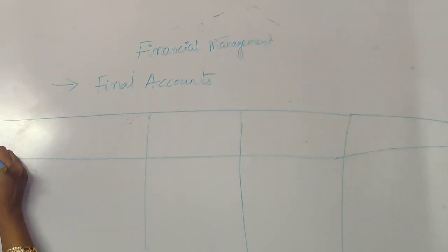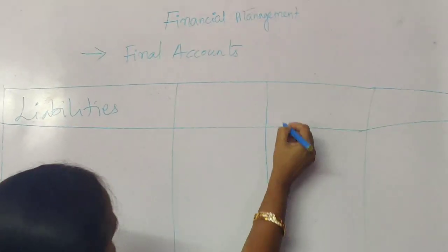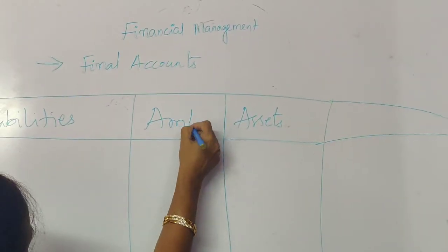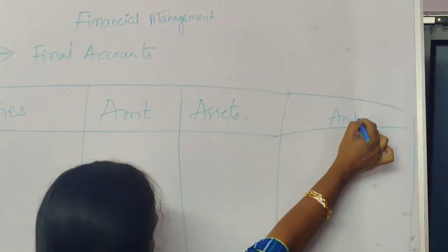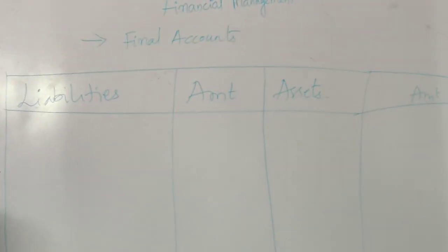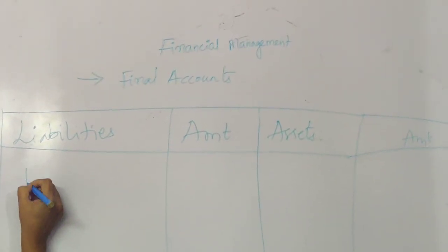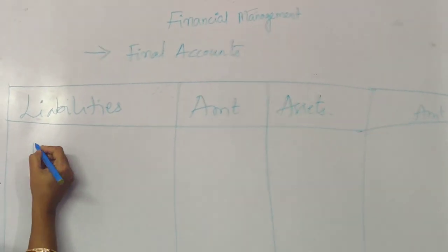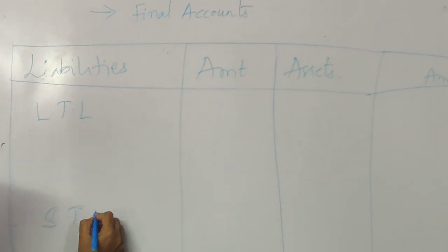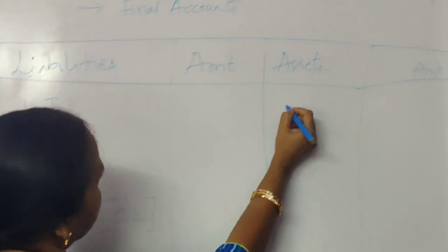As you all know, the balance sheet is the final thing which we prepare. Since you are very familiar with this, I am going to connect this to financial management. In the balance sheet, under liabilities we have long-term liabilities and short-term liabilities. Short-term liabilities are also considered as current liabilities.